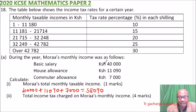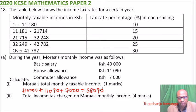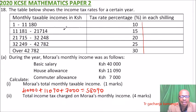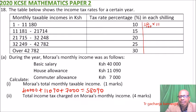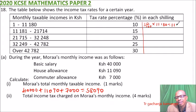For Part B, we calculate the tax charged in each bracket based on the taxable income of 58,090. Starting with the first bracket: 10 percent, which is 10 over 100, multiplied by 11,180. Using your calculator, you get 1,118. That is the tax for the first bracket.